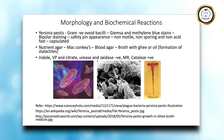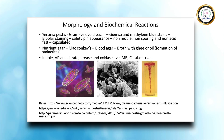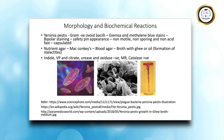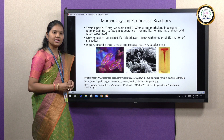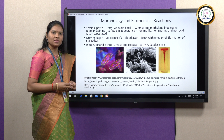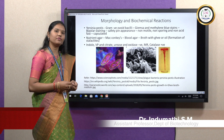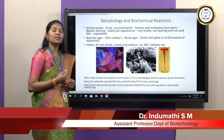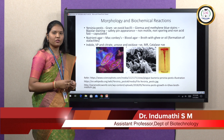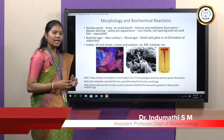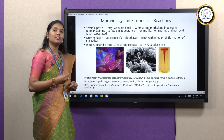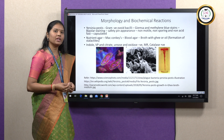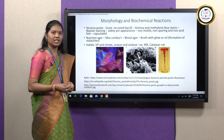Let's first have a look into the general characteristics of Yersinia. Yersinia is basically a parasite in rodents. Rodents are mammals which have continuously growing a single pair of incisors as their tooth. Examples for rodents are mice, rats, porcupines, hamsters, guinea pigs, etc.